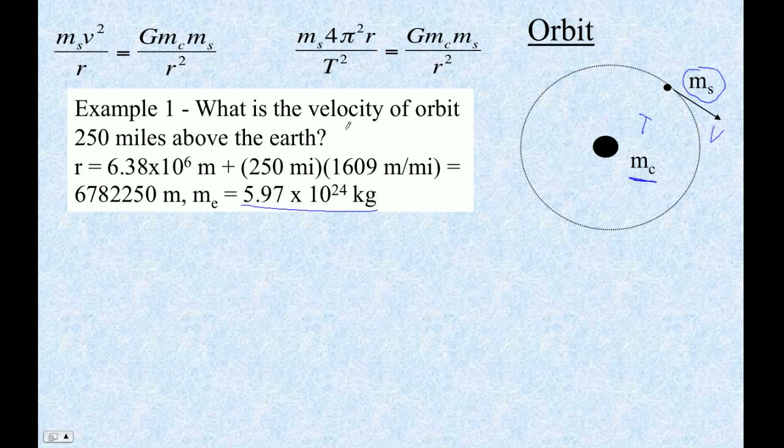The concept here is that when you solve these problems, you just set this centripetal force equal to the force of gravity. That makes sense - the force causing the Moon to go around the Earth is gravity, the force that makes the Earth go around the Sun is just the force of gravity. So we set centripetal force equal to gravitational force.